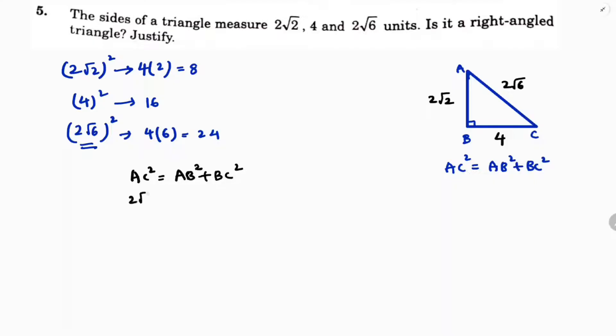AC is 2√6 whole square, AB is 2√2 whole square, BC is 4 square. So 2√6 whole square is 24, this is 8 and this one is 16. So 24 equals 24. It satisfies right angle triangle.